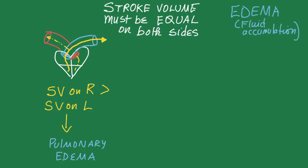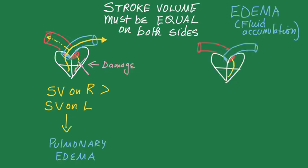The cause for this might be that the left side of the heart is damaged — the pink cross there shows you the damaged left side. The opposite is true for systemic edema. When the left side pumps more than the right side, the result is systemic edema. Remember, the left side is pumping to the body, so the edema ends up in the body.